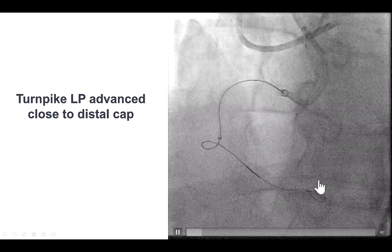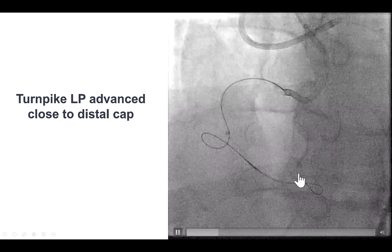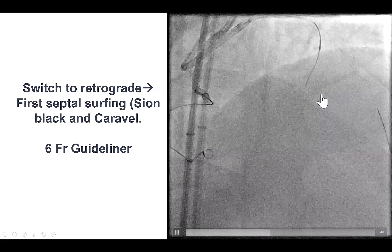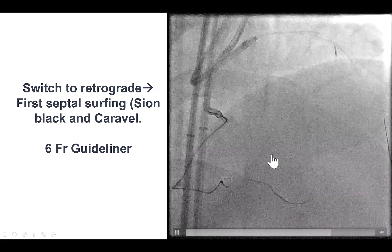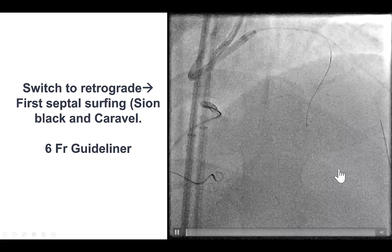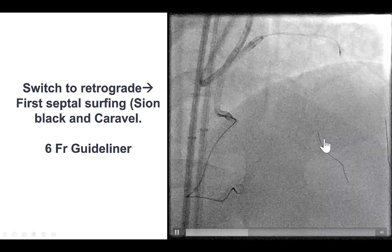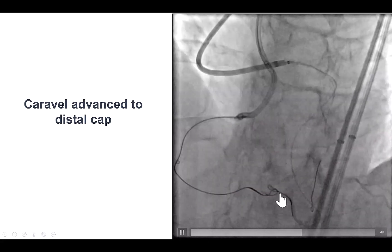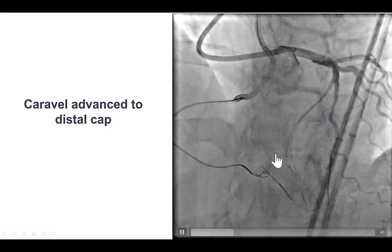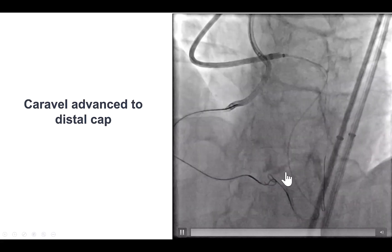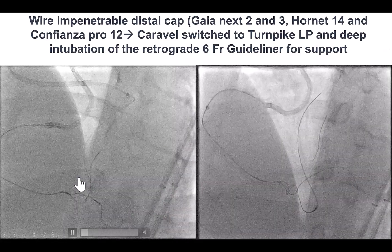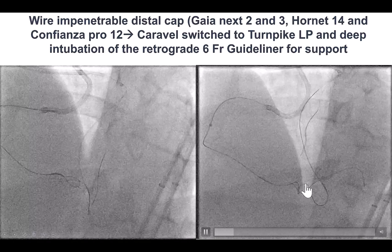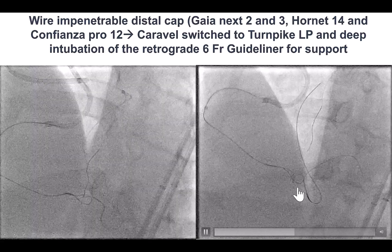Because of the bifurcation of the distal cap, we knew it would be challenging to advance things antegrade and puncture. So we switched to retrograde, going through the septal collateral using a Sion Black and a Caravel microcatheter. To our pleasant surprise, this time we were able to get through the septal fairly quickly, and the microcatheter advanced fairly easily as well. Now we had the Caravel essentially all the way to the distal cap, with the antegrade knuckled wire serving as a marker for the location of the proximal vessel. We again had difficulty puncturing the distal cap, despite having the antegrade knuckled wire as a marker.